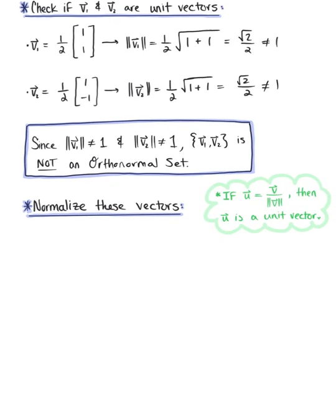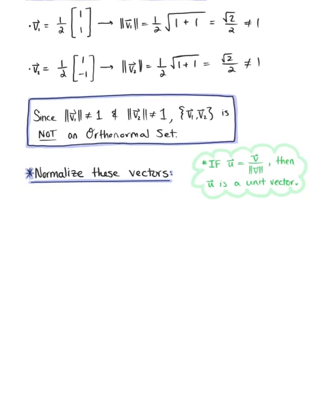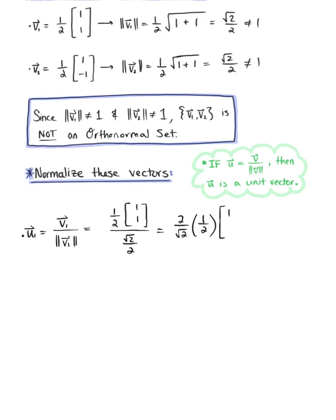Starting with vector v₁, let vector u₁ be equal to v₁ divided by the magnitude of v₁. So v₁ is defined as 1/2 times the vector with components 1, 1, all divided by √2/2, which leaves us with 2/√2 multiplied by 1/2 times the vector 1, 1. The 2's cancel, leaving us with 1/√2 times the vector 1, 1.